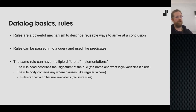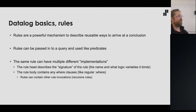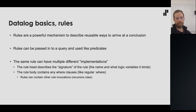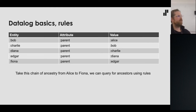Another powerful feature of Datalog is rules. Rules are a mechanism to describe reusable ways to arrive at a conclusion. They're passed into the query and can be used like predicates. The same rule can have multiple implementations — the rule head describes the signature (name and logic variables it binds), and the rule body contains where clauses. Rules can invoke other rules, making recursive rules very easy.